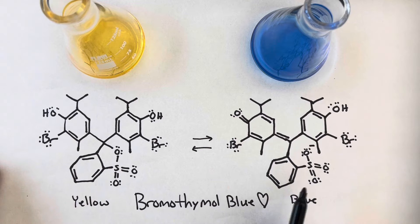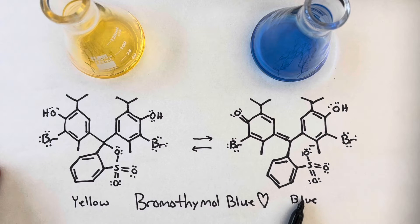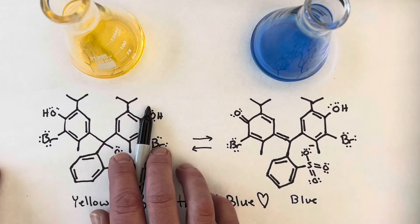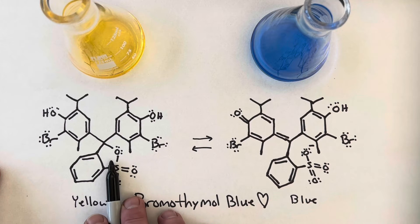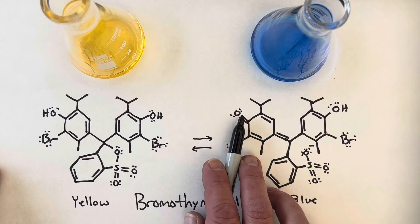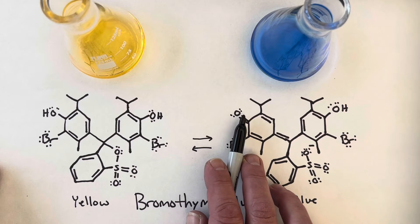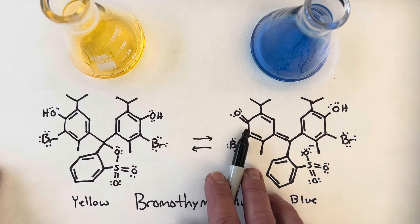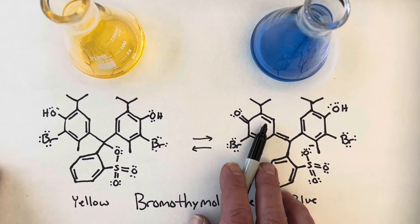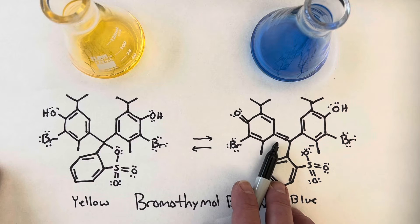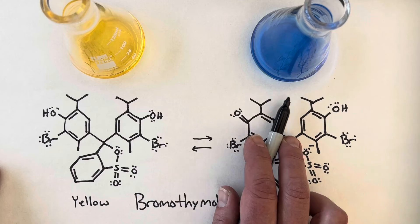A similar thing happens with bromothymol blue, another great acid-base indicator, which goes from yellow in acidic solutions to blue in basic solutions. You can see some similarities between the two structures. In acidic form, there are extra protons and a five-membered ring. Then when protons become more scarce, the whole molecule shifts, losing its proton in one particular location, and the bonding changes similar to phenolphthalein. We get resonance and different locations of double bonds, which allows it to absorb and reflect different photons of light, giving us a blue color instead of yellow.